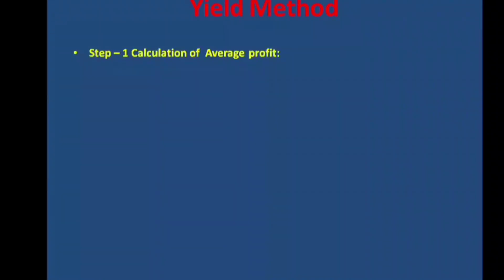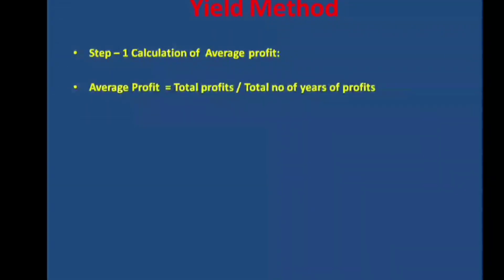Step 1: Average profit = total profit ÷ total number of years. Here we have 3 years of profit data, so average profit = sum of 3 years' profit ÷ 3.